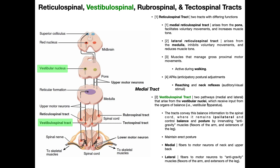The vestibular nuclei receive input from the organs of balance in the inner ear — the vestibular apparatus. The ears feed information to the vestibular nucleus, which can then make adjustments to skeletal muscle in order to maintain balance. Any loss of equilibrium is sensed via the vestibular apparatus — the semicircular canals, utricle, and saccule. They send information to the vestibular nucleus, which can indirectly modify muscle tone and contraction in certain muscles in order to maintain balance.